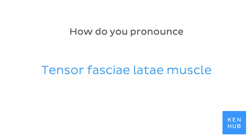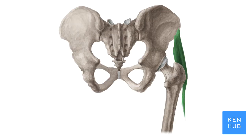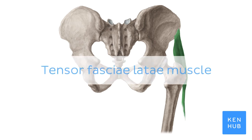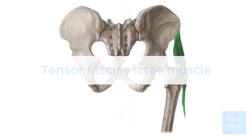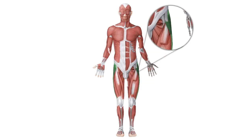How do you pronounce tensor fascia latae muscle? Tensor fascia latae muscle. And to help you memorize this term, here are some additional images. We selected them for you from our Atlas of Human Anatomy, showing this structure highlighted in green.